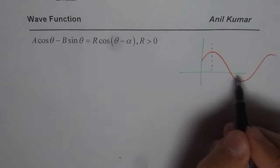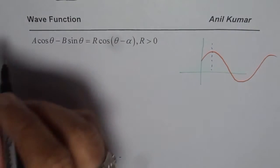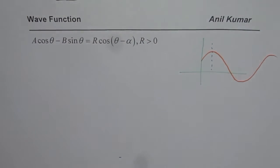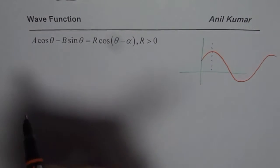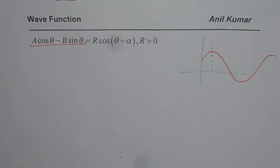A general equation of this wave could be written as A cos θ minus B sin θ. In general we could describe this wave as A cos θ minus B sin θ, a combination of cosine and sine function.